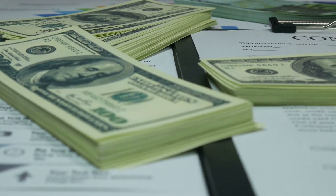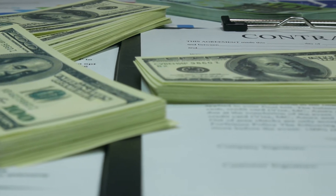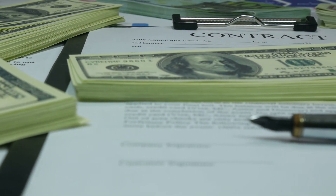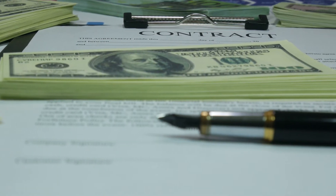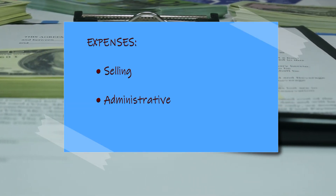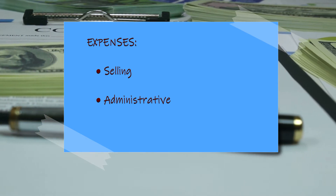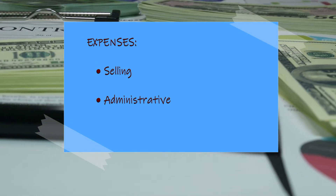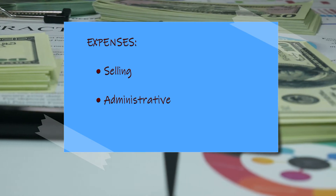Selling expenses are those costs that are directly related to the selling of a product or service. For example, selling expenses include sales salaries, sales commissions, and advertising costs. Administrative expenses include other costs not directly related to the selling, such as office salaries and other office costs.